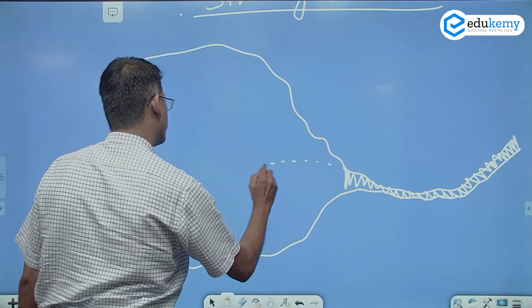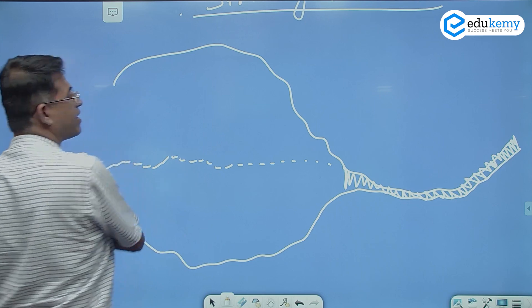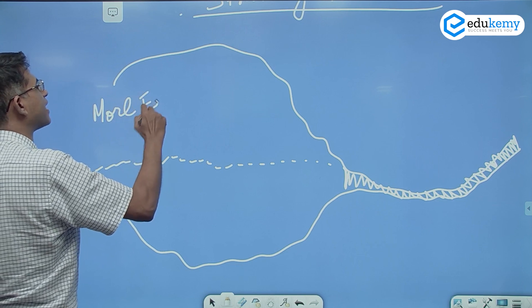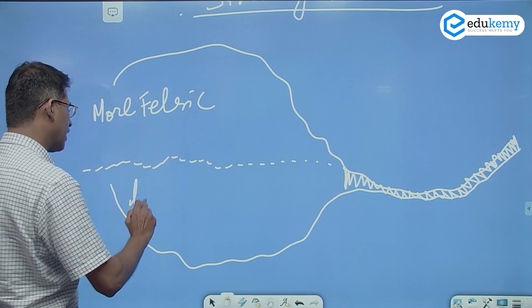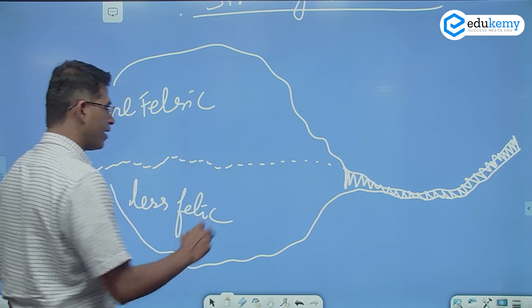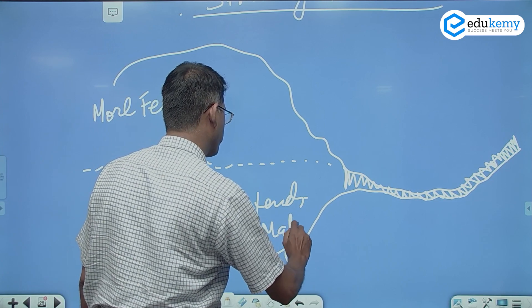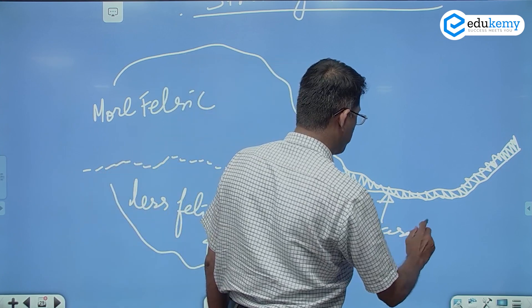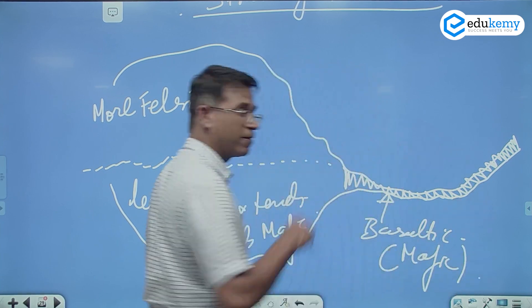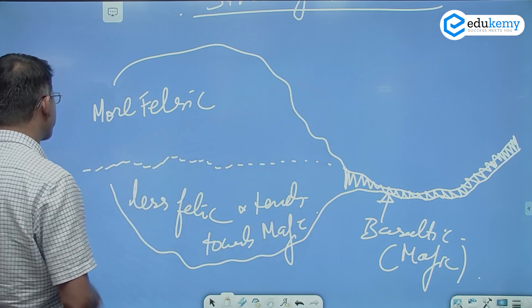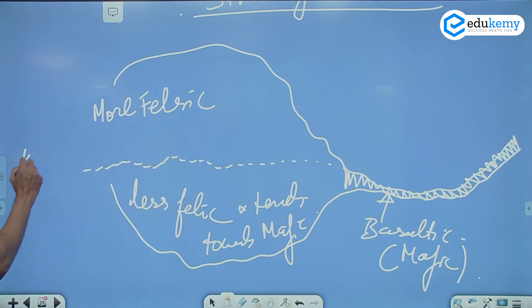And the continent will also have some variations. The upper part, this is more felsic. The lower part is less felsic and tends towards mafic. The oceans are basaltic. They are mafic. The division differs. Approximately around 40 to 60 kilometers depth from surface. This line is called as Conrad line.